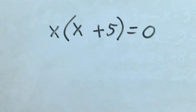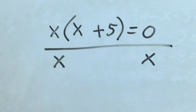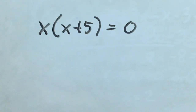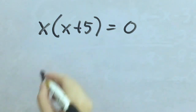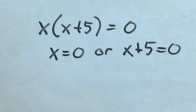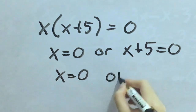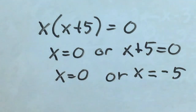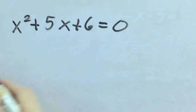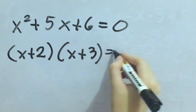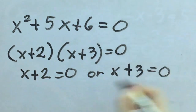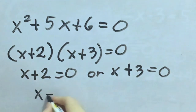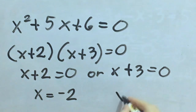How about x times x plus 5 equals 0? A common error is to divide both sides by x, but dividing by x makes the implicit assumption that x is not 0, and division by 0 is not allowed. Instead, apply the zero product property and solve. The roots are 0 and negative 5. For our last example, can you answer this? The roots are negative 2 and negative 3.